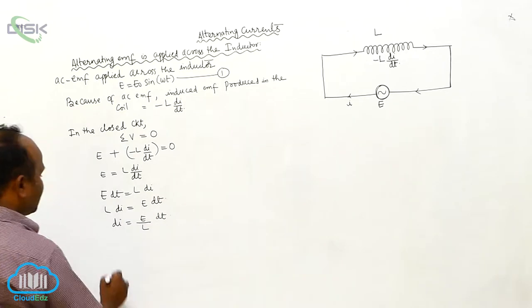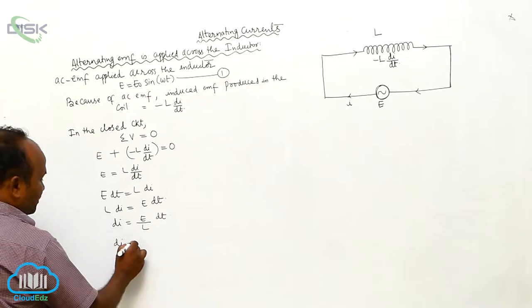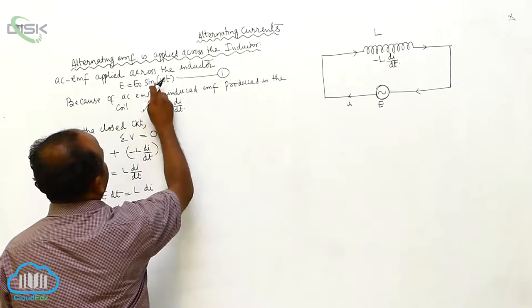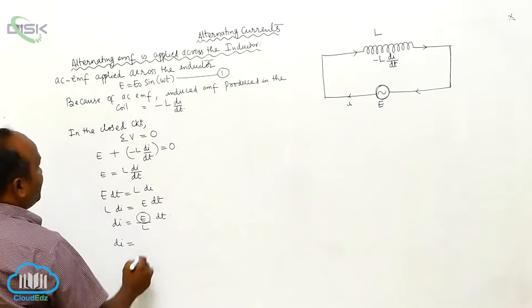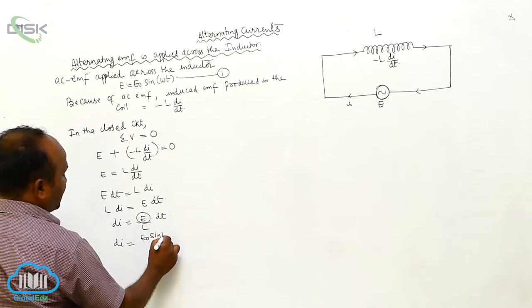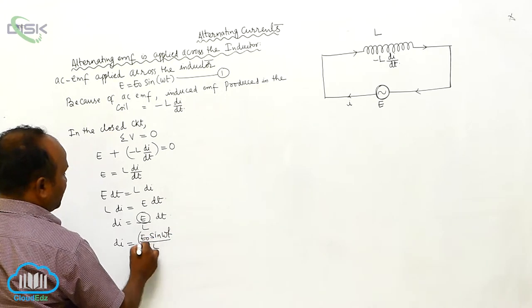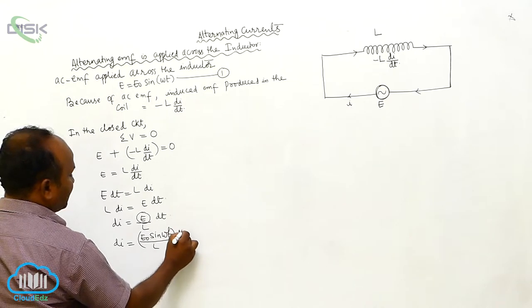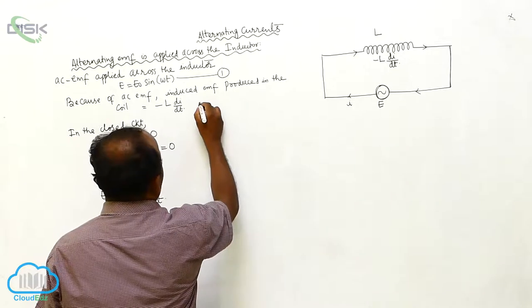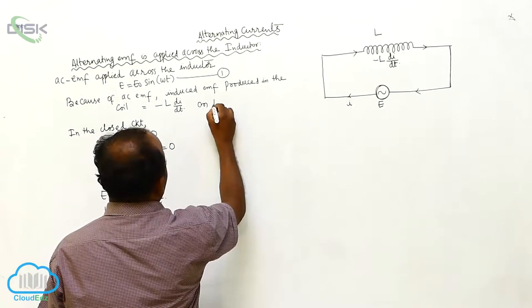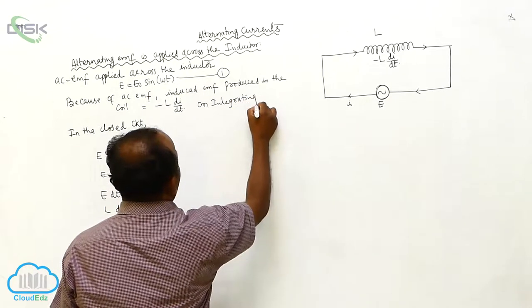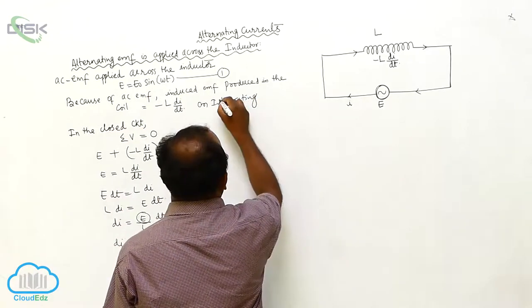Now, substituting E = E₀ sin ωt, we get dI equals (E₀ sin ωt / L)·dt. On integrating both sides: